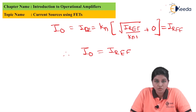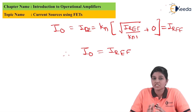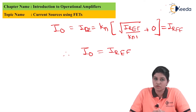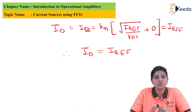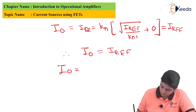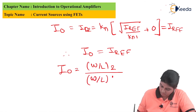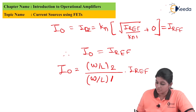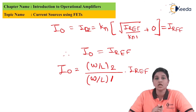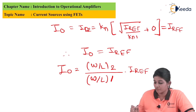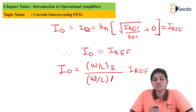This holds only when both MOSFETs have equal characteristics. If the width-to-length ratio, or aspect ratio, of both MOSFETs are not equal, then the output current will not equal the reference current. In that case, we must consider the aspect ratio, and the output current is given by: I_output = [(W/L)₂ / (W/L)₁] × I_reference. Since the aspect ratios are not matched, the reference current does not equal the output current.